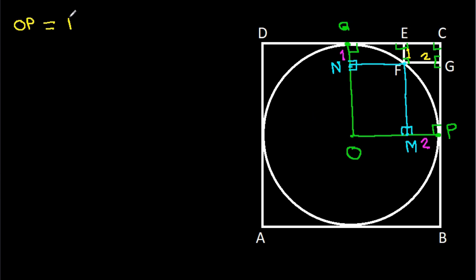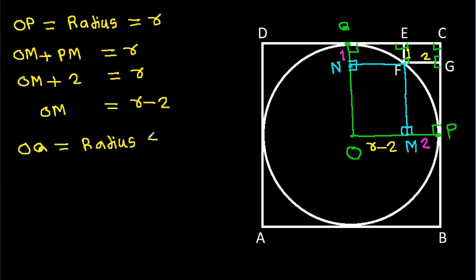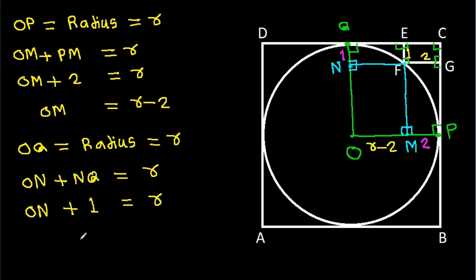Let the radius be R. OP is radius, so OP equals R. Since OP equals OM plus PM, and PM is 2, we get OM equals R minus 2. Similarly, OQ is radius, so OQ equals R. Since OQ equals ON plus NQ, and NQ is 1, we get ON equals R minus 1.